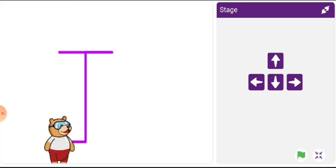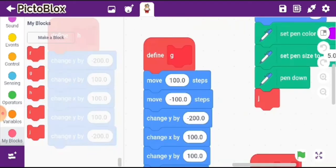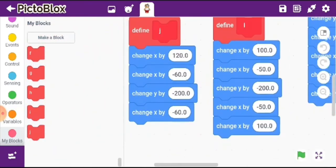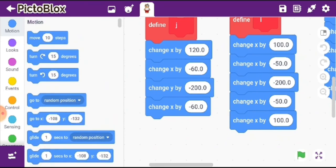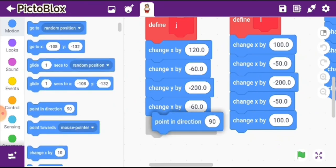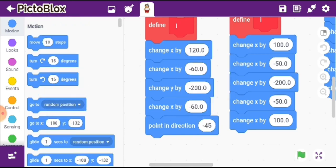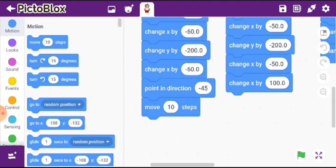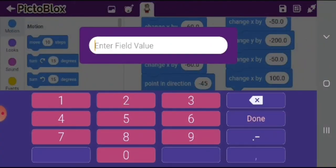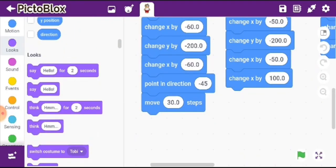To make it more interesting, we can put point in direction to minus 45 and then move steps 30. We'll hide the sprite now. This is more interesting.